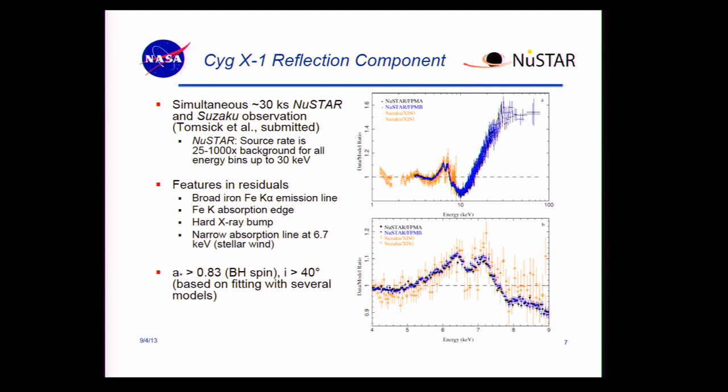This is the Cygnus X-1 reflection component. What this shows are residuals when I fit the Cyg X-1 spectrum with a thermal disk component and a power law — a very simple model. NuSTAR is shown in blue and black, and we had simultaneous observations with Suzaku shown in orange. One impressive statistic is that for NuSTAR, the source rate is 25 to 1,000 times the background rate for all bins up to 30 keV, so we're getting really incredible signal-to-noise in these spectra.